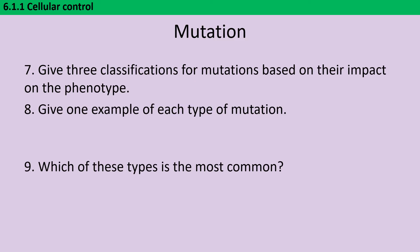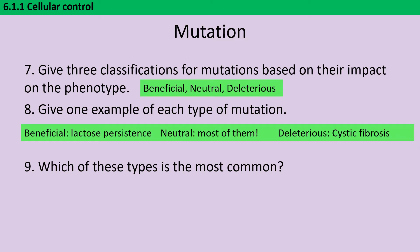Classifying mutations can get a little bit confusing because we can classify them into different groups depending on whether we're looking at the DNA sequence, the protein sequence, the protein activity, or finally the phenotype. Looking at the impact on the phenotype, we split mutations into beneficial ones which help the organism, neutral ones which don't have any impact, and deleterious ones which are actively harmful. For beneficial mutations, the most likely example you'll know is lactose persistence, although you could also think about the mutation that leads the peppered moth to be dark, which would be beneficial in industrial environments with dark trees.